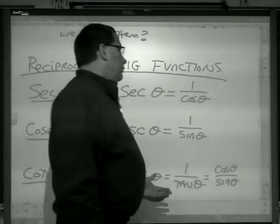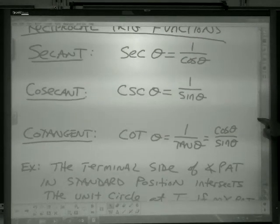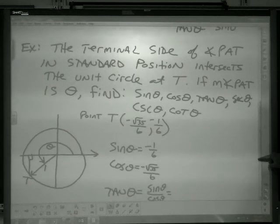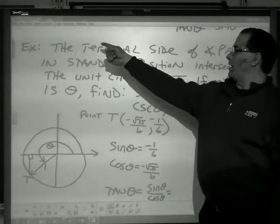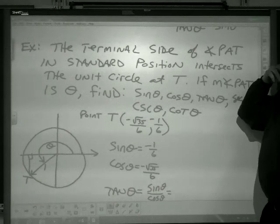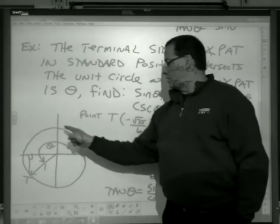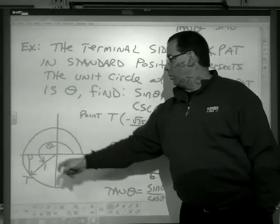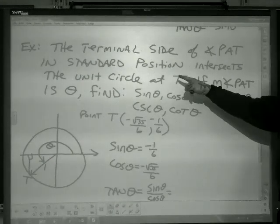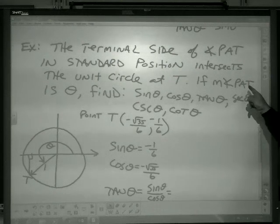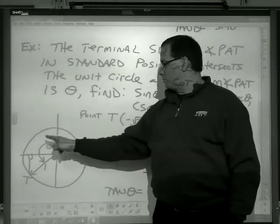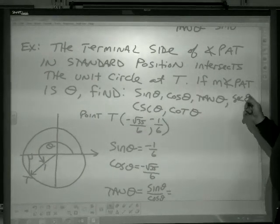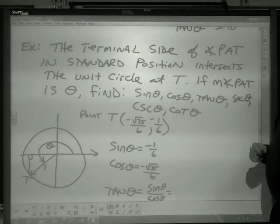How do we use them? How do we find them out? Let's say you're going to be given like a big, long word problem, but we can filter this out a little bit. The terminal side or ending side of an angle, P-A-T, in standard position, which means it starts at the positive x-axis, intersects the unit circle, so I know the radius is 1, at some point T. If the measure of angle P-A-T is theta, so here's my angle theta. Find the sine, the cos, and the tangent, and the secant, the cosecant, and the cotangent.